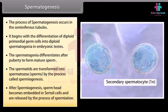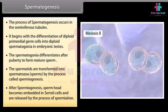After spermiogenesis, sperm heads become embedded in Sertoli cells and are released by the process of spermiation.